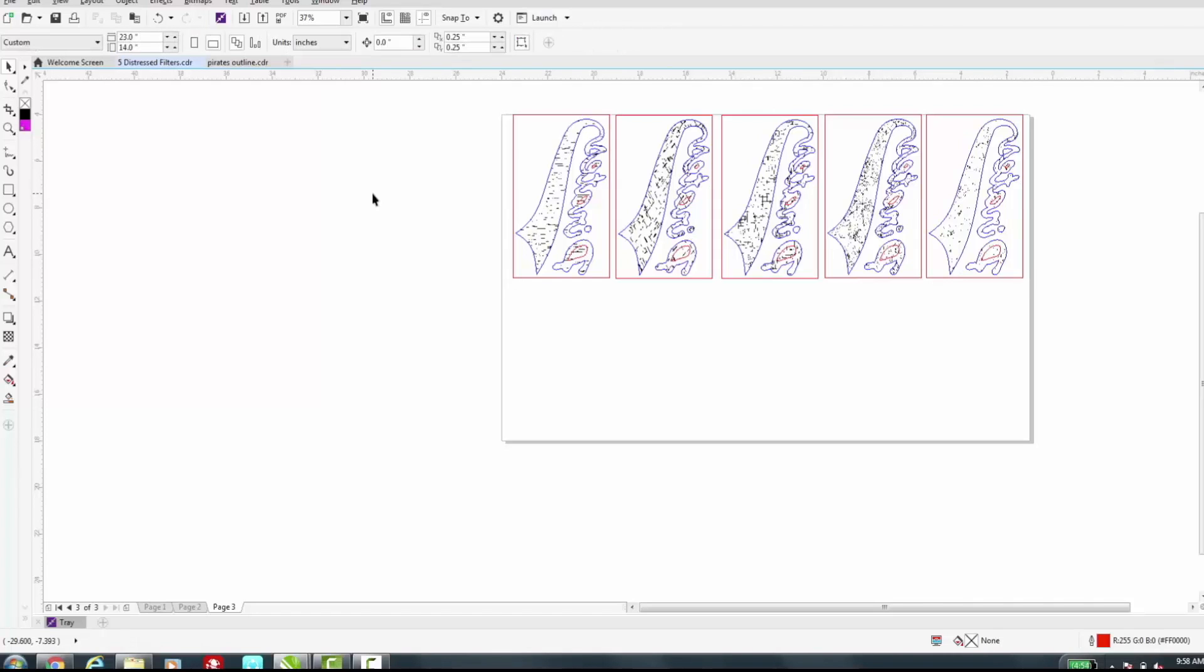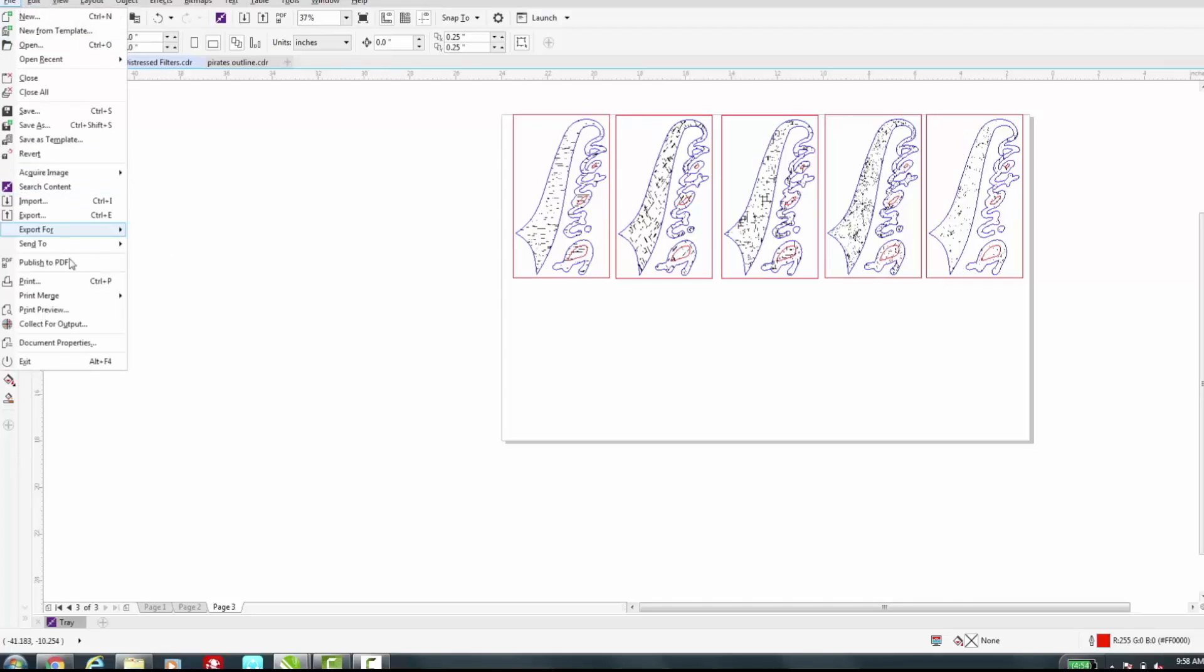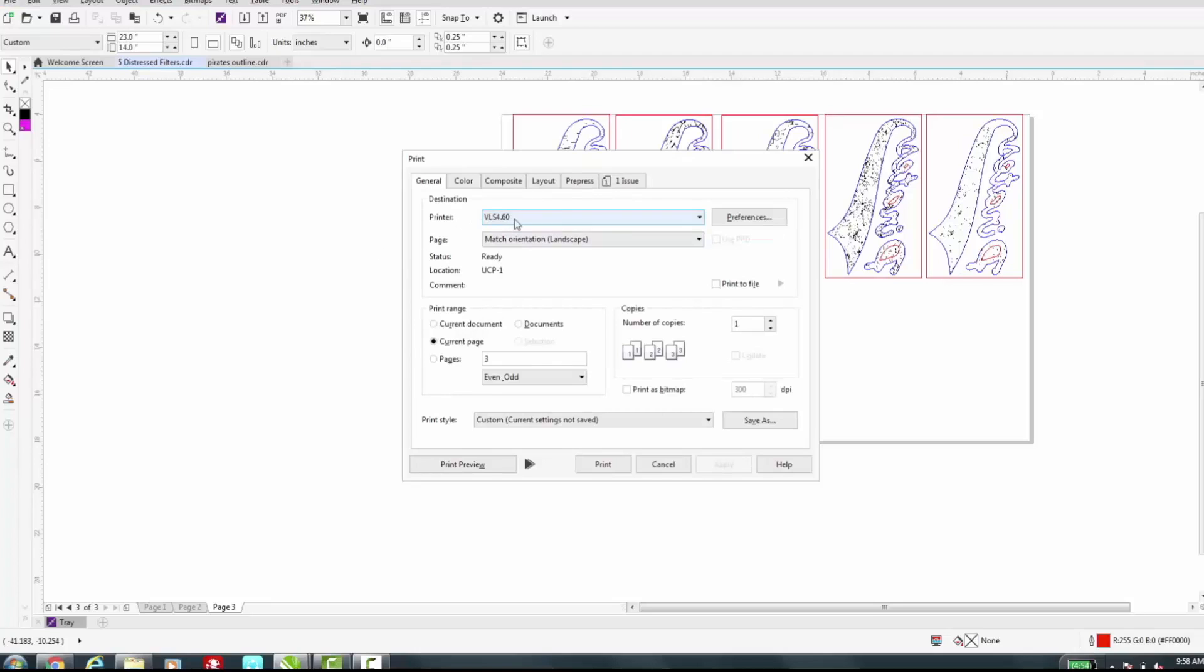Now we're ready to send these to the laser. We'll go to File, Print. We have our universal laser system selected. We'll click on Preferences.